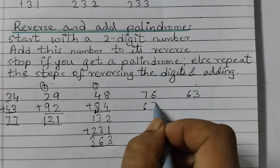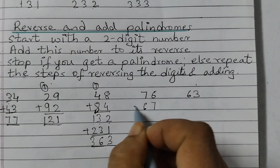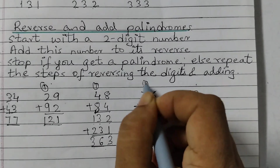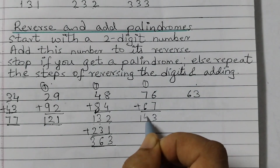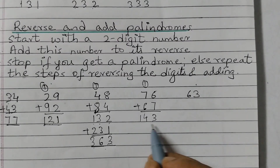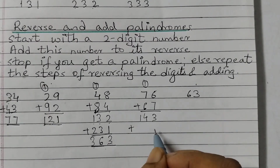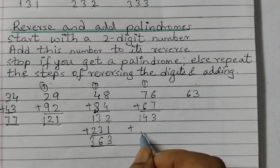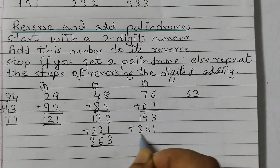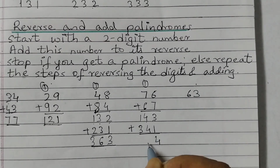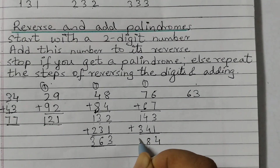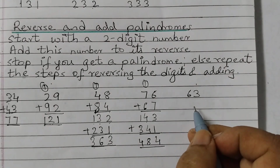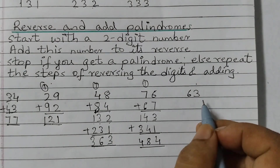For 76: its reverse is 67. Adding: 6 plus 7 is 13, carry 1; 7 plus 6 plus 1 is 14 — giving 143. Not a palindrome, so we reverse to get 341 and add. 3 plus 1 is 4, 4 plus 4 is 8, 1 plus 3 is 4 — giving 484, a palindrome.